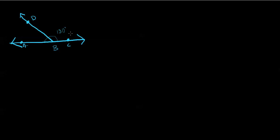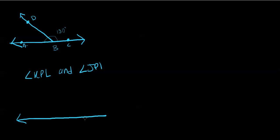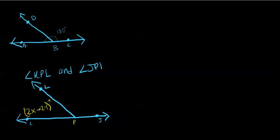Now we're going to look at an example of finding missing angle measures. Angle KPL and angle JPL are a linear pair. The measure of angle KPL equals 2x + 24, and the measure of angle JPL equals 4x + 36. We want to find both angle measures. Since they are a linear pair, we draw a straight line and split it to form the two angles. Using the definition of supplementary angles, the measure of angle KPL plus the measure of angle JPL equals 180 degrees.